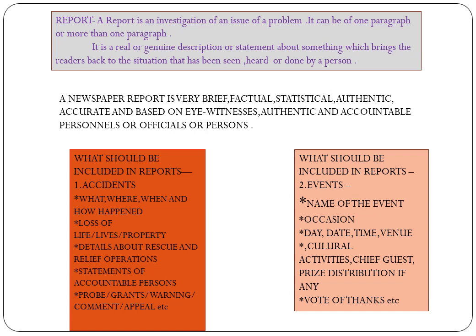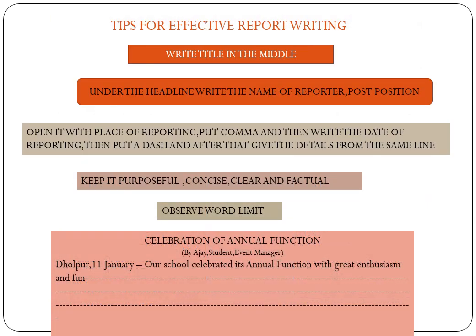अगर हम events को report writing के रूप में लिख रहे हैं, तो हमें क्या-क्या चीजें लिखनी पड़ेंगी: name of the event या occasion — हमें उस event या occasion का नाम लिखना पड़ेगा, किस date, किस time, किस venue में हम उस event को मना रहे हैं — वो सारा वर्णन करना पड़ेगा। Cultural activities, अगर कोई चीज invite की है, prize distribution किया जा रहा है, और अंत में vote of thanks या धन्यवाद — वो भी हमें लिखना पड़ेगा।